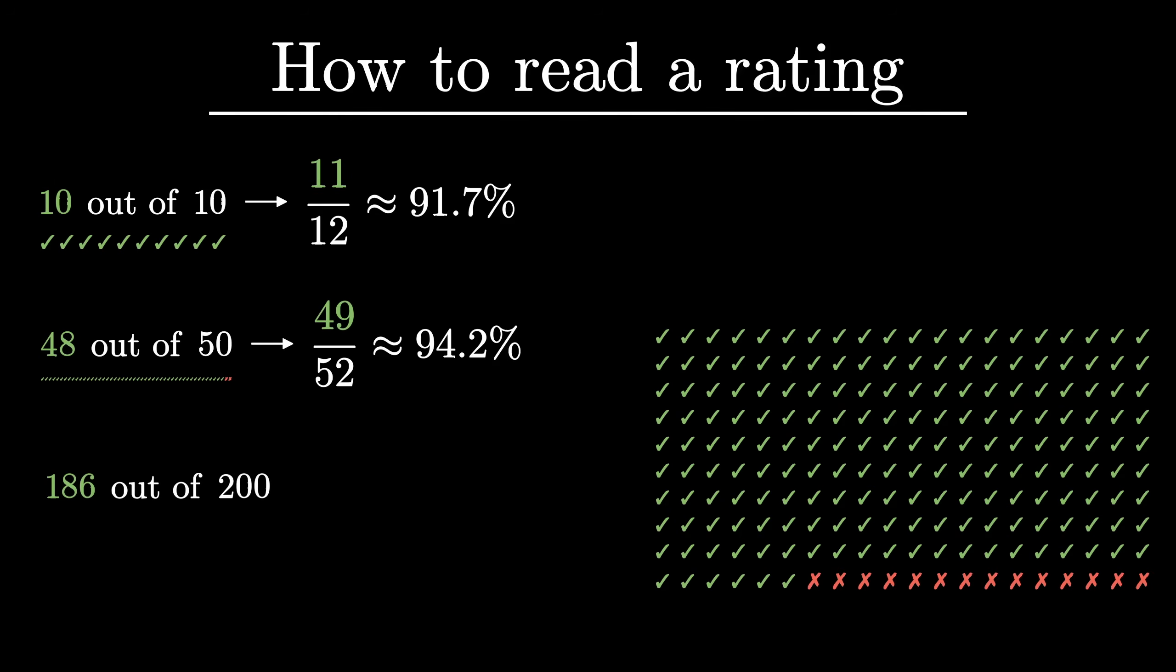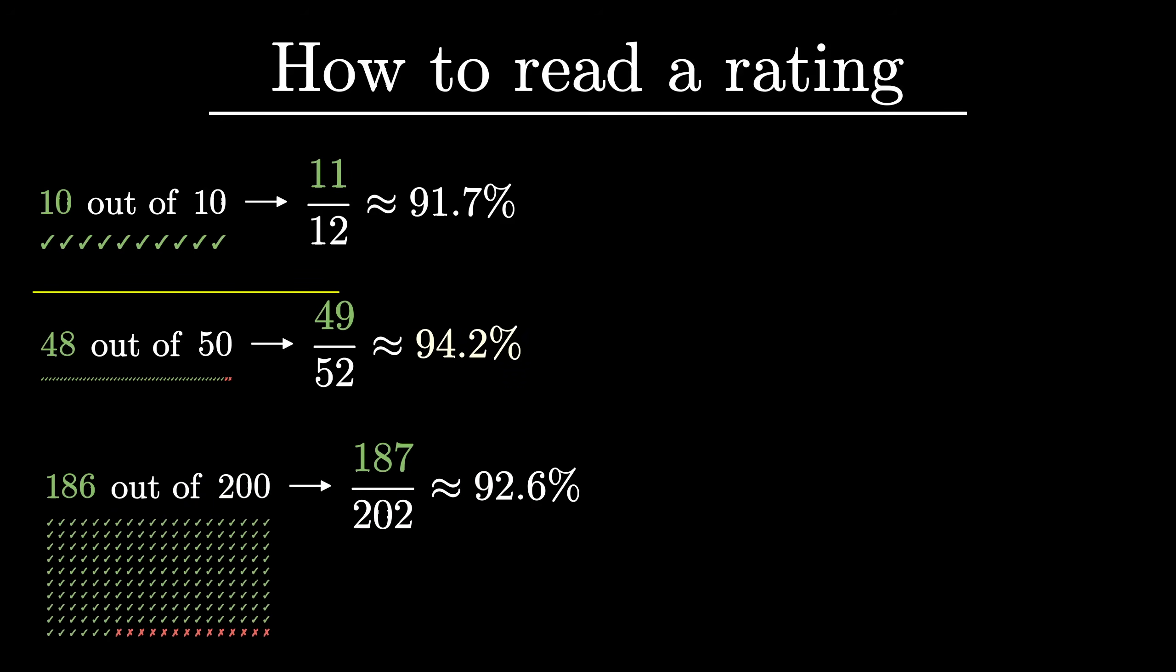Playing the same game with our third seller who had 200 reviews, you get 187 out of 202, or 92.6%. So according to this rule, it would mean your best bet is to go with seller number 2.